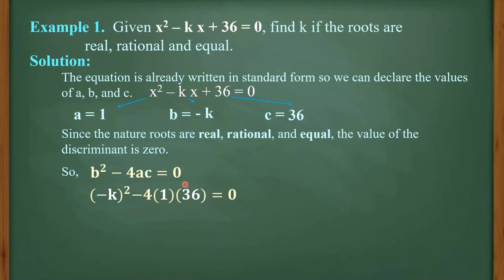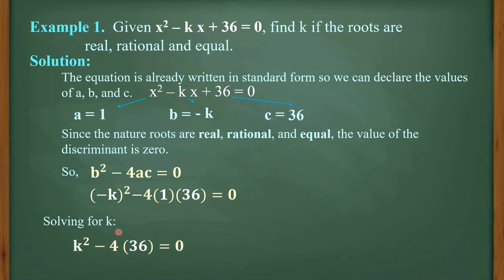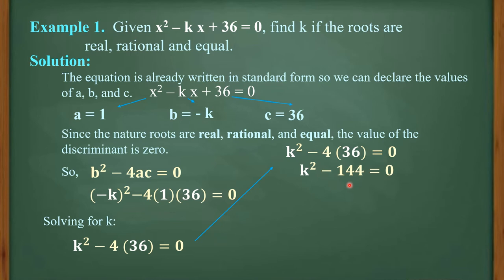So, b squared minus 4ac equals 0. Substituting: negative k squared minus 4 times 1 times 36 equals 0. Negative k times negative k is positive k squared, minus 4 times 1 is 4 times 36, which is 144. So k squared minus 144 equals 0. By the addition property of equality, k squared equals 144.